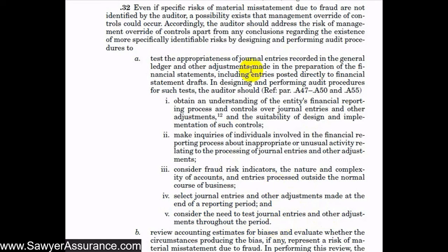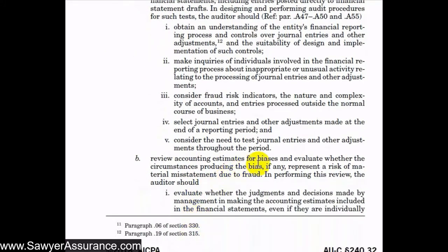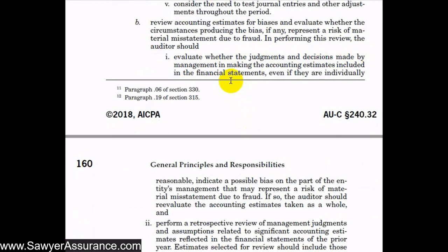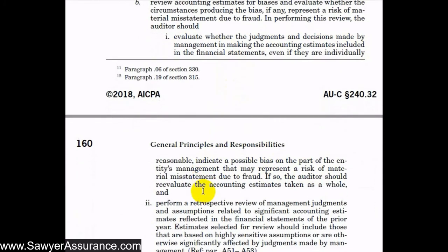Another thing we might do to address the risk of management override of controls is to review accounting estimates for biases and evaluate whether the circumstances producing the bias represent a risk of material misstatement due to fraud. We might look at our most sensitive estimates — for instance, the fair value of Level 3 investments or the contractual allowance for medical companies — to see if they make sense. We evaluate whether management's judgments and decisions indicate a possible bias, and if that risk appears justified, we should reevaluate the accounting estimates taken as a whole.